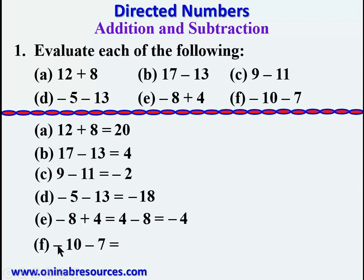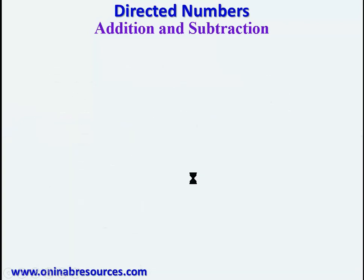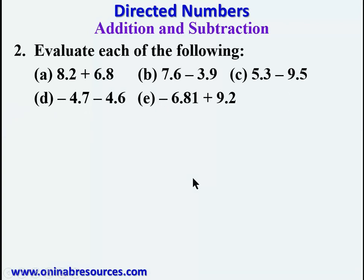For part f: negative 10 minus 7. This is another case of negative number minus a negative number. We pick the common sign, which is negative, then add 10 plus 7, which gives 17. Therefore negative 10 minus 7 gives negative 17. We are done with problem 1 and move to problem 2.